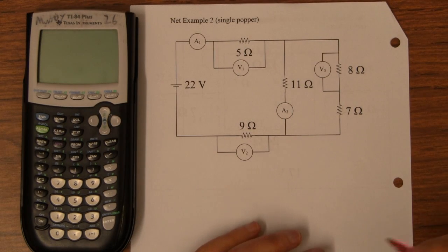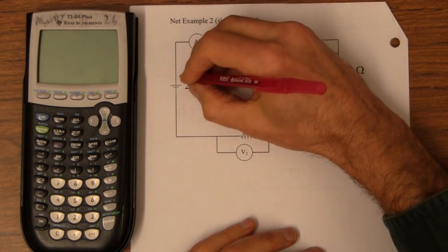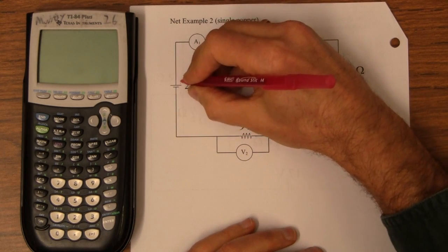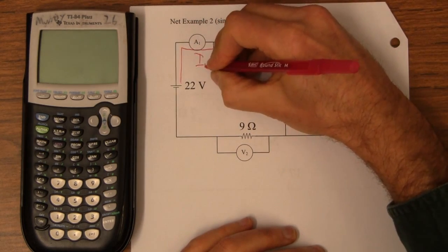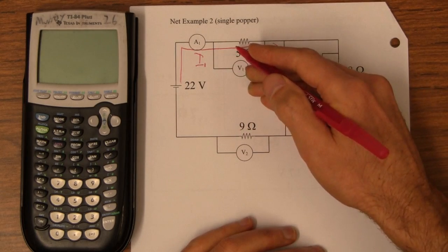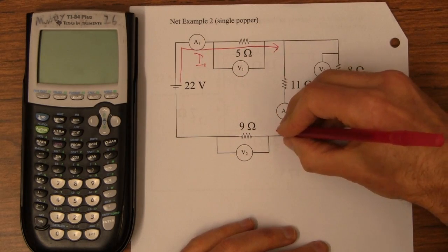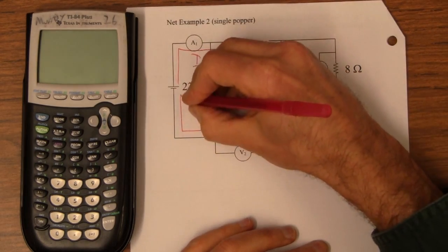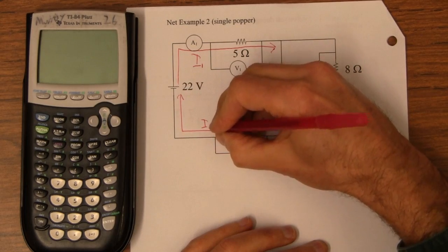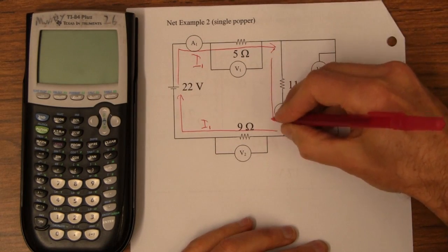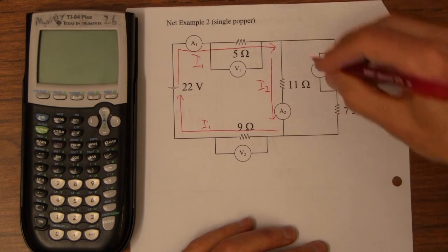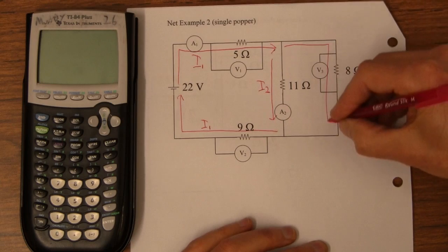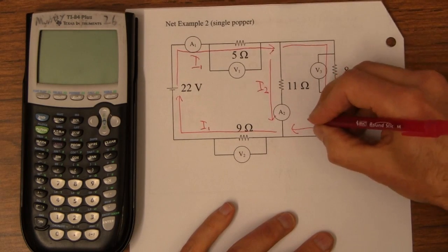The first thing to do with Kirchhoff's Laws is to draw in your current. So, I'm going to do these guys in red. I'm going to call the current that goes this way I1. An I1 also comes back to the battery. That's the same current. I'm going to call this current here I2, and then this current here, I'm going to call I3.